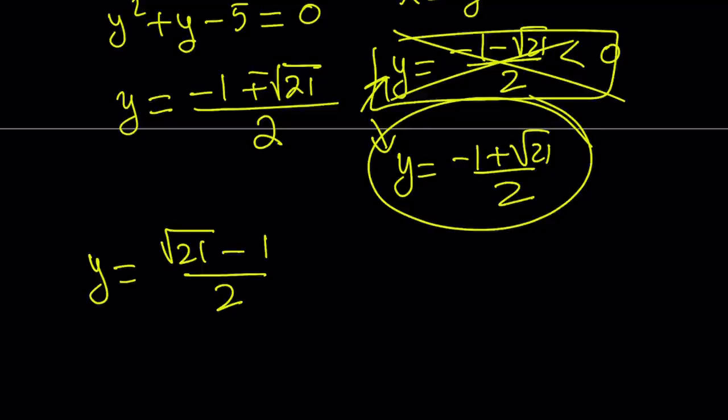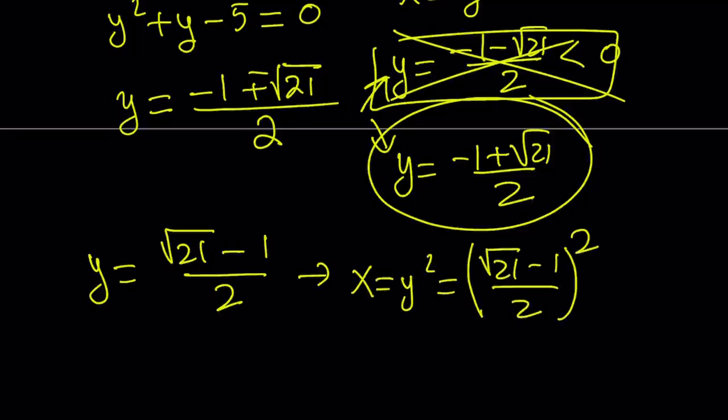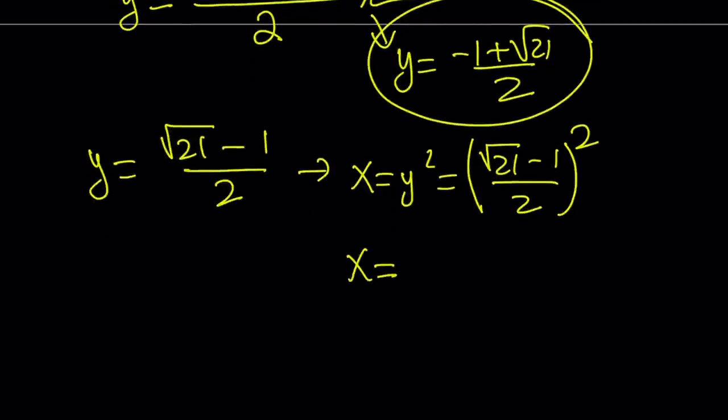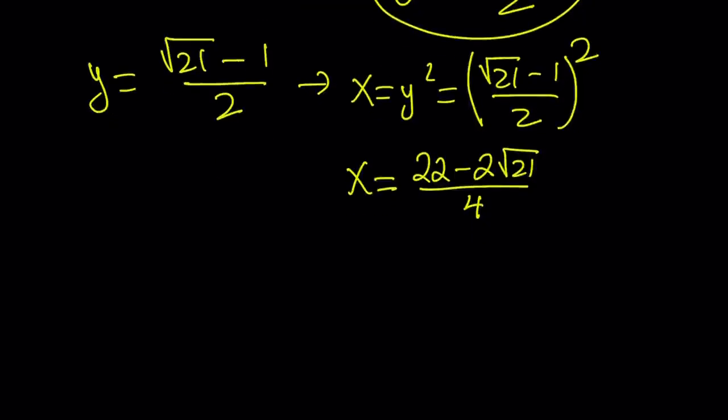Obviously, I'm not interested in y directly. I want to find x, and remember, x is equal to y squared. So let's go ahead and square this expression. If you square a minus b, you know you get a squared minus 2ab plus b squared. And then, if you put it together, you're going to get 21 plus 1, which is 22, minus 2 times the square root of 21, divided by 4. And we can simplify this.